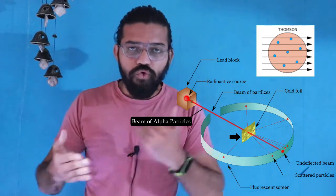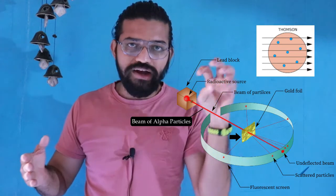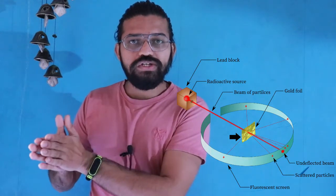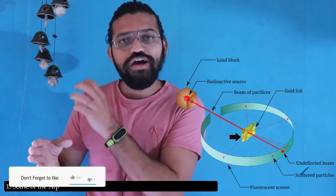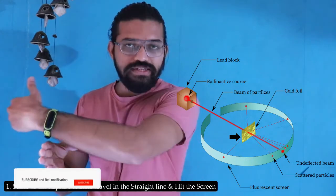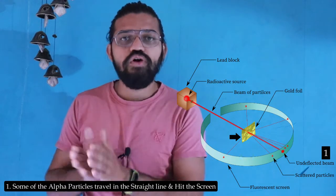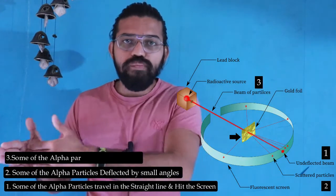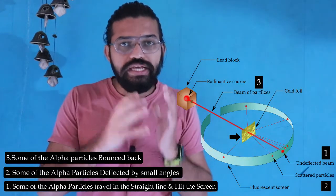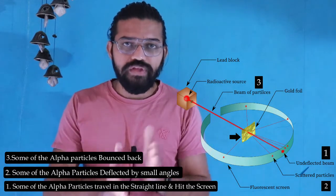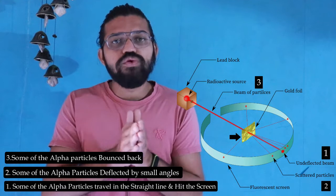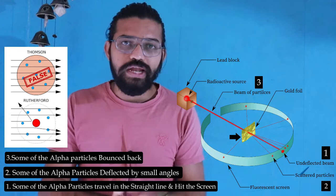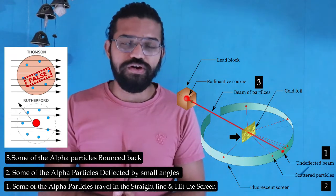However, Rutherford observed a very different phenomenon when he allowed alpha particles to hit the gold foil. Some of the alpha particles passed through the atoms and hit the screen on the opposite side, some of the rays were deflected by small angles, and some of the alpha particles actually bounced back. He was getting different results, which meant the plum pudding model was not correct.